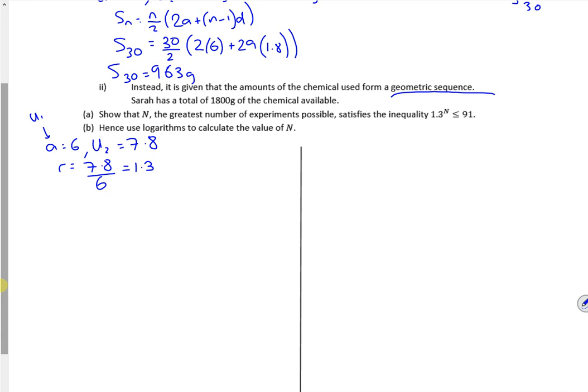Alright, so it says it's got a total of 1800 grams. So that N is the greatest number of experiments possible. Alright, okay. So it's the same idea, it's how many experiments can I do before I use up the 1800 grams. So that's what I'm thinking here for part N.